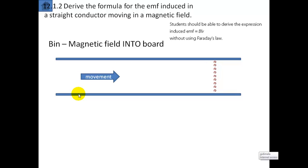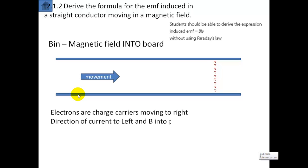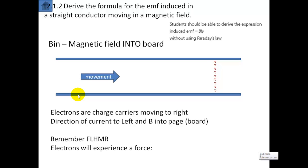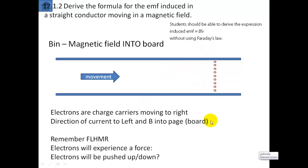Moving charges in a magnetic field will experience a force and will move in a certain direction. So these electrons are moving to the right. If the electrons are moving to the right, by definition the current is going to the left. Using Fleming's left-hand motor rule: if the magnetic field is going into the board and the current is going to the left, the electrons will experience a force downwards. So in going from left to right, they will actually be forced to go down as well.